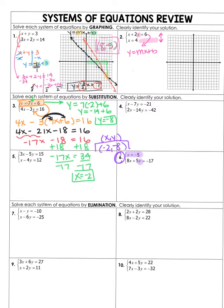I'm going to go ahead and do number 4 with you. It says x minus 7y equals negative 21, and 2x minus 14y equals negative 42. In this example, neither one is solved for a variable — I don't have x equals or y equals. So I'm going to pick the one that would be easiest to solve for a variable, which is the first one, because in front of x there's only a 1. I'll solve for x: x minus 7y equals negative 21, add 7y to both sides, so x equals 7y minus 21. Now I have what x equals, so I can go back into my other equation and substitute 7y minus 21 in for x.